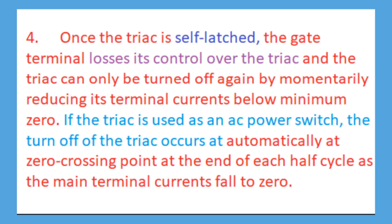Fourth, once the TRIAC is self-latched, the gate terminal loses its control over the TRIAC, and the TRIAC can only be turned off again by momentarily reducing its terminal currents below minimum zero. If the TRIAC is used as an AC power switch, the turn-off of the TRIAC occurs automatically at the zero crossing point at the end of each half cycle as the main terminal currents fall to zero.